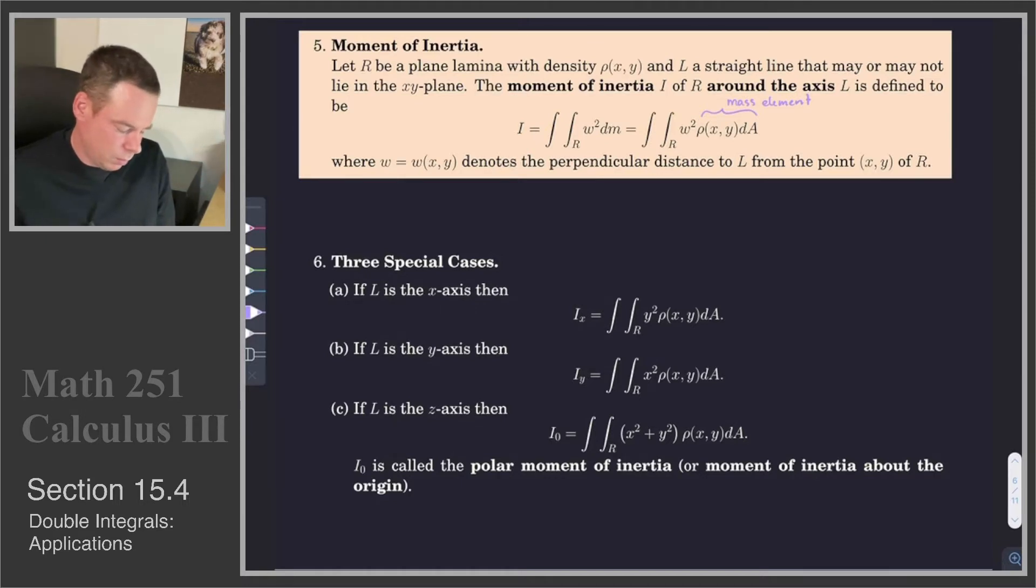So in the particular case where we choose our axes accordingly, for example, if L is the x-axis, then the distance is going to be the y-value of the point, and that's called Ix, the moment of inertia about the x-axis. So that's the integral of y² ρ dA.